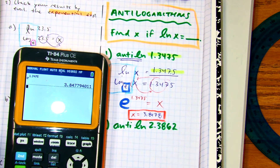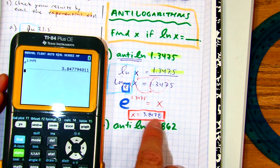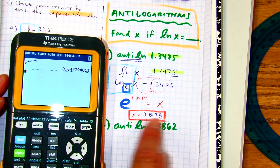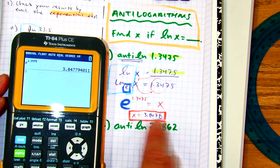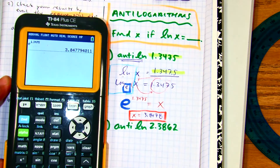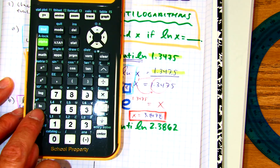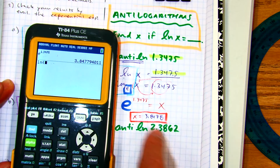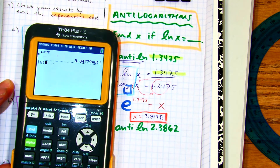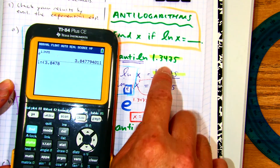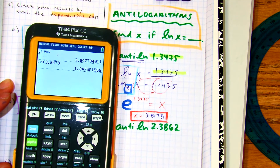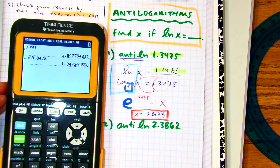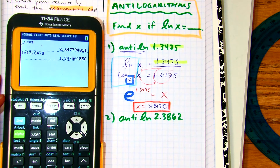Let's go ahead and round this answer to 4 decimal places, just like we did. That gives me 3.8478. And math is so awesome that you can actually check your answer — x is this number, so we can actually type in natural log of x and get that answer. So it's just a reverse operation of what we just did previously.